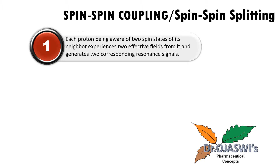Now what is spin — we have already learnt that in my earlier video. If you don't remember, please go back and watch the earlier video. For example, if I have these two carbons and I have a hydrogen (proton) on this carbon, and the other substitutions on these carbons are different — suppose it is R-dash and R-double-dash — that means these two protons are chemically non-equivalent.